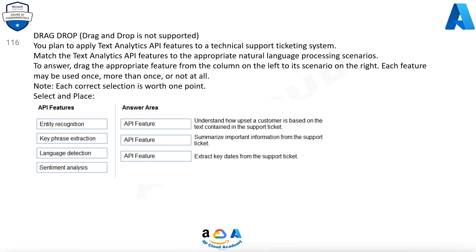Question 116. You plan to apply text analytics API features to a technical support ticketing system. Match the text analytics API features to the appropriate natural language processing scenarios. Drag the appropriate feature from the column on the left to its scenario on the right. Each feature may be used once, more than once, or not at all. Note, each correct selection is worth one point.